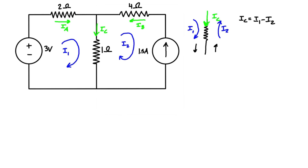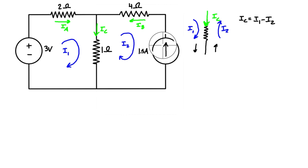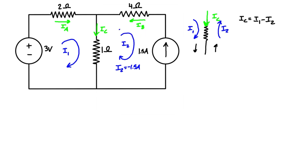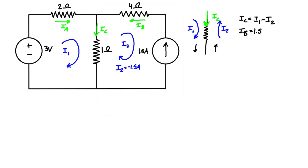Looking at this, I2 is going counterclockwise, so I2 is coming down, but we know that 1.5 amps is going up. So by inspection, I2 is equal to negative 1.5 amps. For the resistor that I2 passes through — if I2 is going this way and it's negative 1.5 amps, we just switch the direction, meaning the actual current through that resistor is 1.5 amps flowing to the left. So IB equals 1.5 amps, which also equals negative I2.